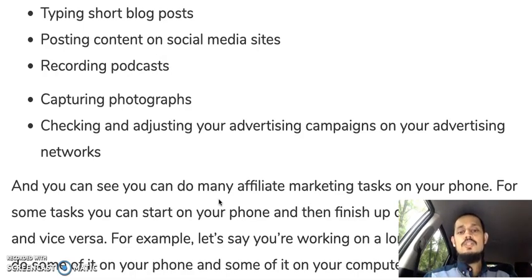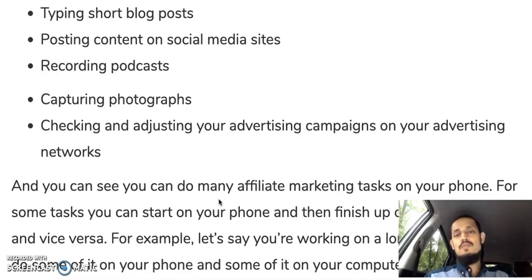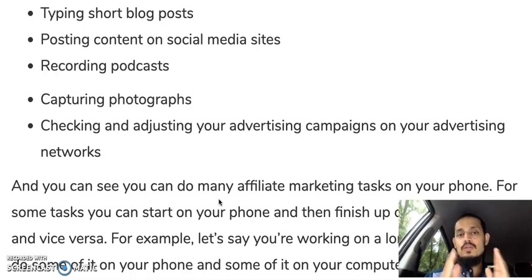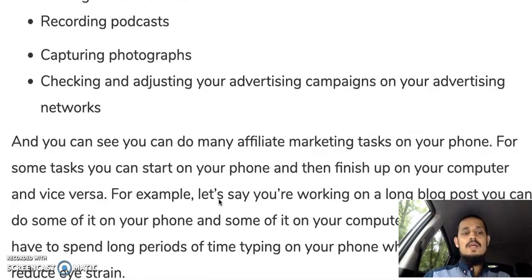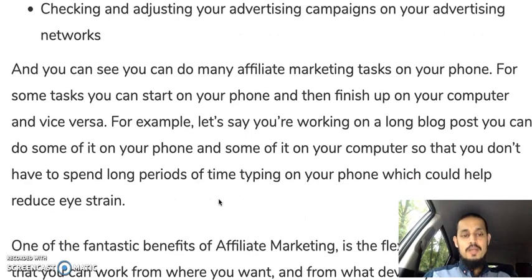Checking and adjusting your advertising campaigns on your advertising networks is also possible on your phone, though depending on the visual interface — for example, Google or Bing advertising networks — it can be a bit difficult to read due to columns and small data fields. But you can try it. As you can see, you can do many affiliate marketing tasks on your phone, and for some tasks you can start on your phone and finish on your computer, interchanging between the two depending on your situation.